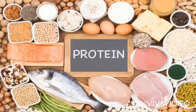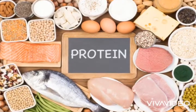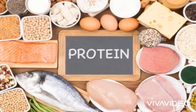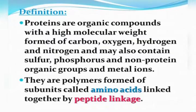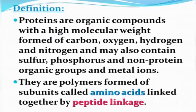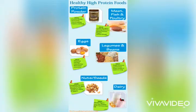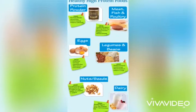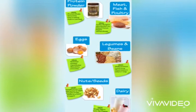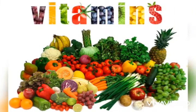Now we are going to learn about the second nutrient, which is protein. Proteins are organic compounds with high molecular weight. Some examples include protein powder, meat, fish and poultry, eggs, legumes and beans, nuts and seeds, and dairy products.